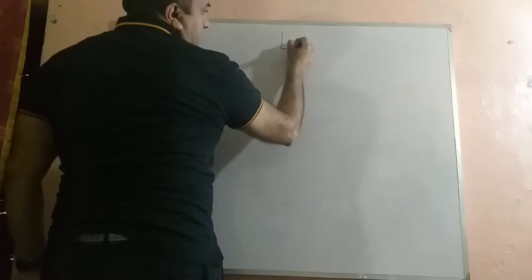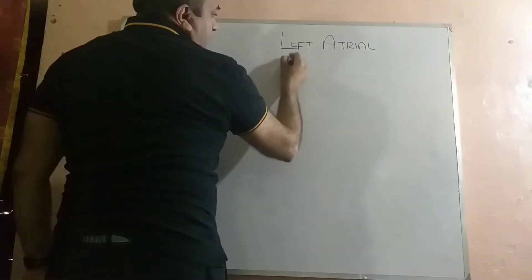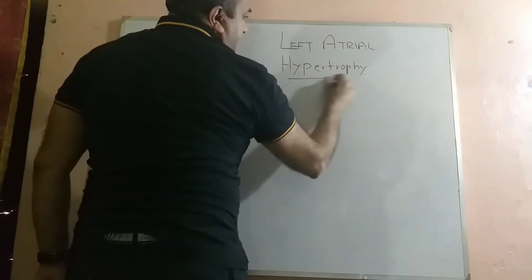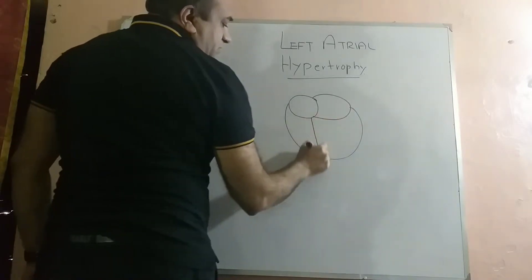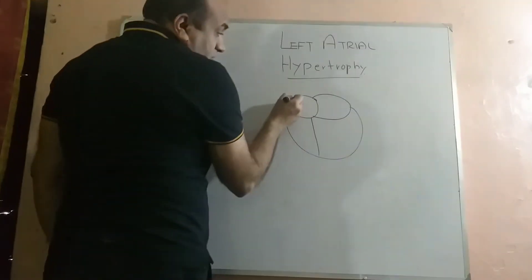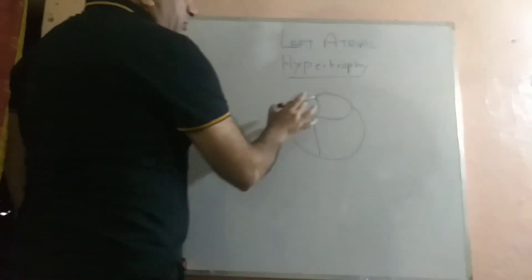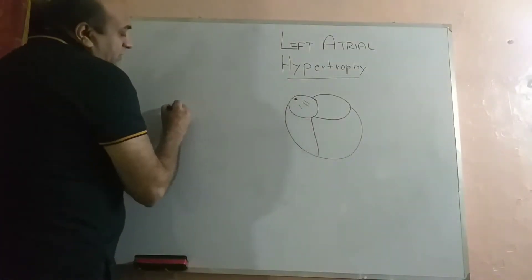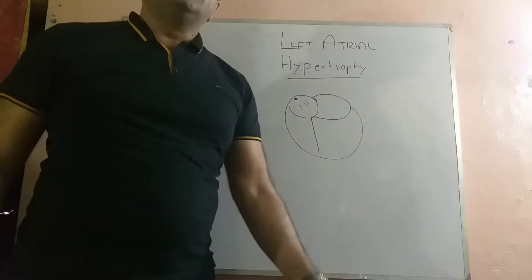Today we will talk about left atrial hypertrophy. We know there are two atrias located on top of the ventricles. The SA node is located in the right atrium, and the wave of depolarization goes through the Bachmann's tract into the left atrium, causing depolarization of the right atrium and generating the first portion of the P wave on the ECG paper.